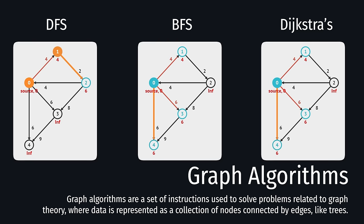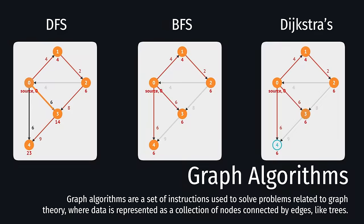Graph algorithms are another type of algorithm you should know. Graph algorithms are a set of instructions used to solve problems related to graph theory, where data is represented as a collection of nodes connected by edges, like trees. Graph algorithms are crucial for handling and analyzing relationships between elements, used in numerous real-world applications like computer networks, social networks, and literal roadmaps. You know how you type in an address in maps and get directions? This is an example of a graph algorithm at work. The data you use graph algorithms on is a collection of nodes connected by edges — you can think of the nodes as intersections and the edges as roads.